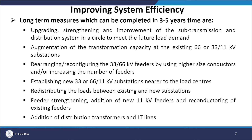Short-term measures also include changeover from LVDS to HVDS. Long-term measures planned over 3 to 5 years include upgrading, strengthening and improvement of sub-transmission and distribution systems to meet future load demand, augmentation of transformation capacity at existing 66 kV or 33 kV substations, reconfiguration of 33 to 66 kV feeders using higher-size conductors or additional feeders, establishing new 33 or 66/11 kV substations nearer to loads, redistributing loads between substations, feeder strengthening, adding new 11 kV feeders, re-conducting existing feeders, and adding distribution transformers and LT lines.